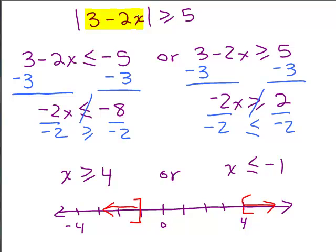So if you put in 0 for x, you'd get 3 minus 0 which is 3, and the absolute value of 3 is 3. Is 3 greater than 5? No. So that's why 0 is not a solution. And you could pick a number to the right of 4 or to the left of negative 1 similarly and check. So that's something I'm going to leave for you to do, just do a little trial to make sure you're in the ballpark here and it seems reasonable that you've got the right answer.